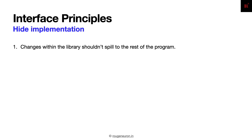If your library is being used as a service where end users are connecting to your service, they should be completely unaware of the fact that a newer version of the library has been deployed. That's where the interface being a boundary becomes most prominent.